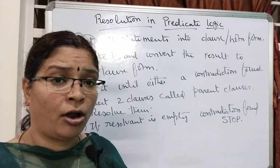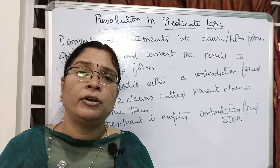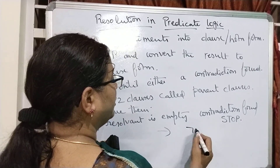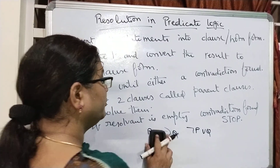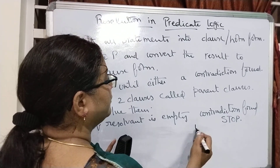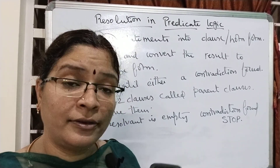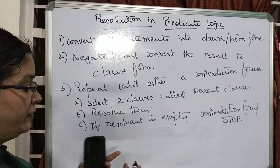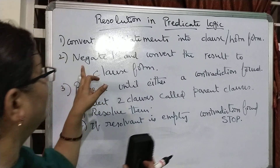In my previous video I already explained how to convert to clause form or horn form. The reduction of the implication symbol: whenever P implies Q is present, you convert it to the form of negation-P or Q. This conversion is called horn form, clause form, or sometimes disjunctive normal form. This conversion step we have already covered in previous videos.